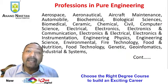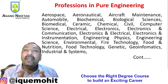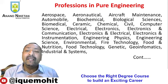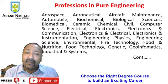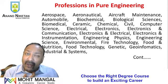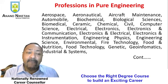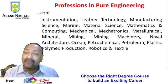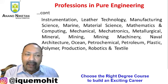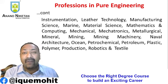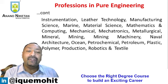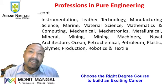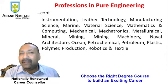After Science A Group, engineering has 50+ specializations available, including: automobile, biochemical, biological sciences, biomedical, ceramic, chemical, civil, computer science, electrical, electronics, electronics and communication, electronics and electrical, electronics and instrumentation, environmental, fire technology, food and nutrition, food technology, genetics, geoinformatics, industrial systems, instrumentation, leather technology, manufacturing science, marine, material science, mathematics and computing, mechanical, mechatronics, metallurgical, mineral, mining, naval architecture, ocean, petrochemical, petroleum, plastic, polymer production, robotics, and textile engineering.